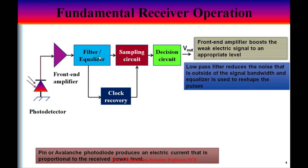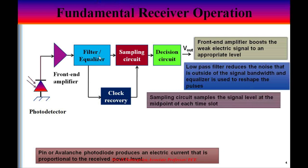The equalizer is used to reshape the pulses to minimize the inter-symbol interference. The sampling circuit samples the signal level at the midpoint of each time slot. The decision circuit decides whether the received signal is either a bit 1 or a 0 depending upon the threshold level. If the received signal level is greater than the threshold level, a 1 is assumed to have been received; if the voltage is below the threshold level, then a 0 is assumed to have been received.